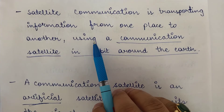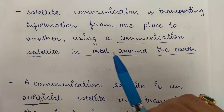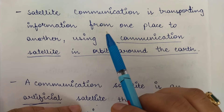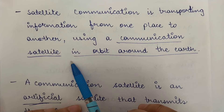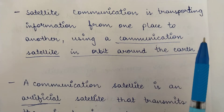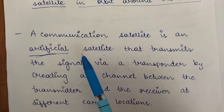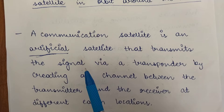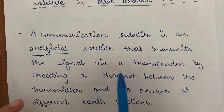Satellite communication is basically transporting information from one place to another between a sender and a receiver, using a communication satellite which is in orbit around the Earth. A communication satellite is an artificial satellite — man-made — unlike the Moon, which is Earth's natural satellite. This artificial communication satellite transmits the signal via a transponder, which is why transponders are a key element in any communication satellite.